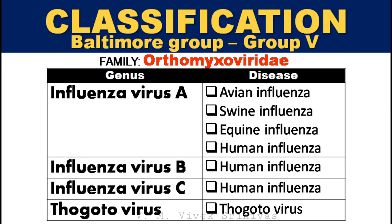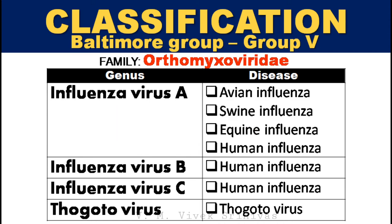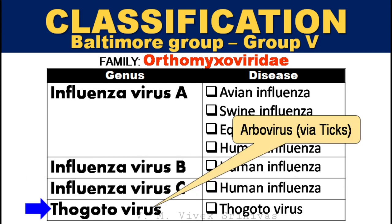Classification. The family Orthomyxoviridae is classified under Baltimore Group 5. The genera under this family are influenza virus type A, type B, type C, and thogatovirus. Only influenza virus type A is known to infect animals, and it is zoonotic — that is, it can infect both animals and humans. Type B and type C influenza viruses mostly infect humans and typically cause mild disease. Unlike the other genera, which are transmitted by droplet, the thogatovirus or arbovirus — that is, arthropod-borne virus — is transmitted by ticks.